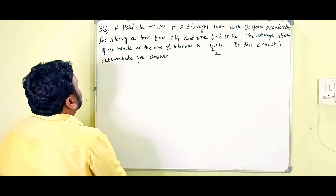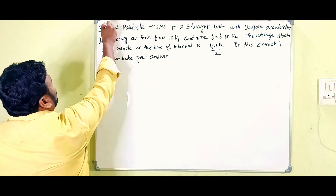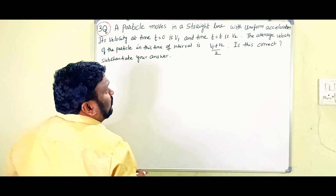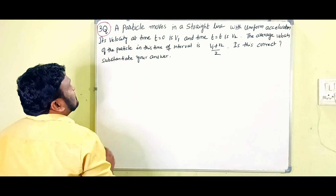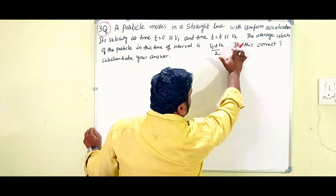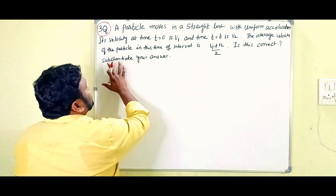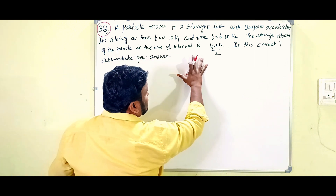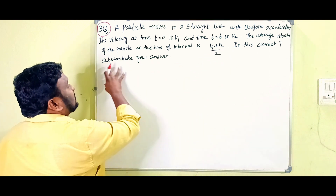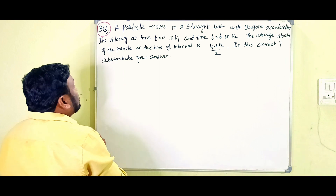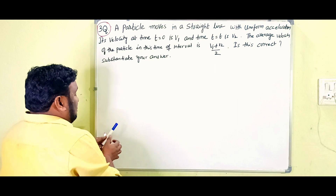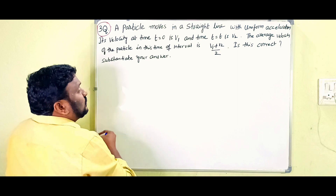Look at the board — the third short answer question: A particle moves in a straight line with uniform acceleration. Its velocity at time t equals zero is v1, and at time t equals T is v2. The average velocity of the particle in this time interval is (v1 + v2)/2. Is this correct? Substantiate your answer.